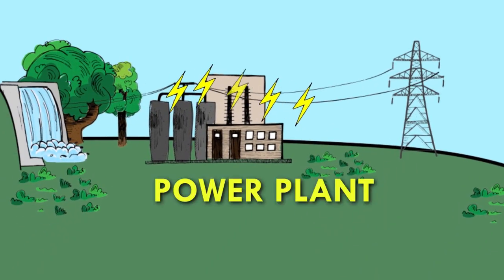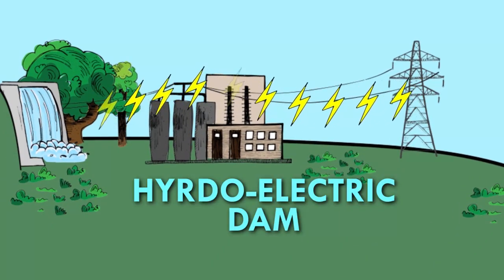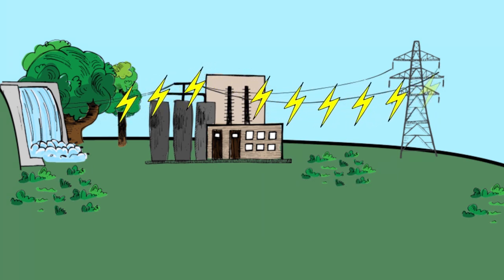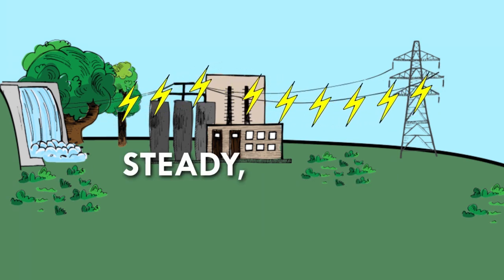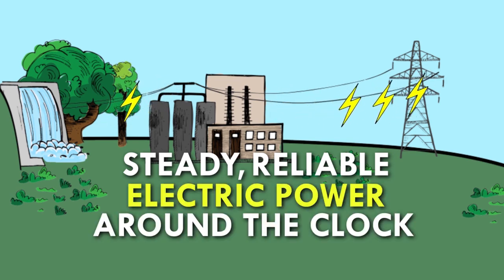Electricity is generated at a power plant or other facility, such as a hydroelectric dam. In fact, most of the country's electricity comes from power plants that can generate steady, reliable electric power around the clock.